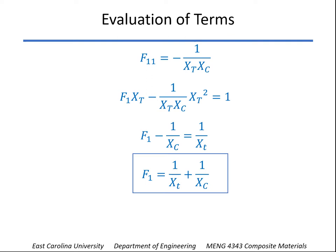Now we can make similar arguments for tests in the transverse direction, where we just put sigma-2 tensile and compression. The results will be similar forms to F1,1 and F1. F2,2 would be minus 1 over yt times yc, and F2 is equal to 1 over yt plus 1 over yc. So the transverse tensile and compression strengths there.